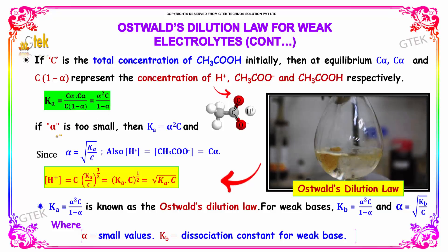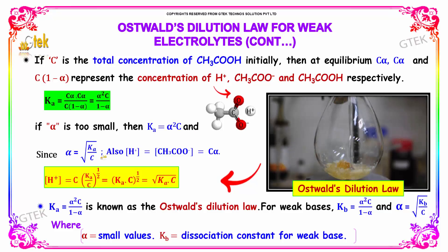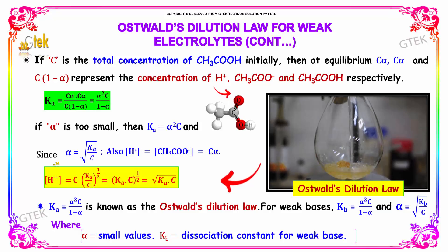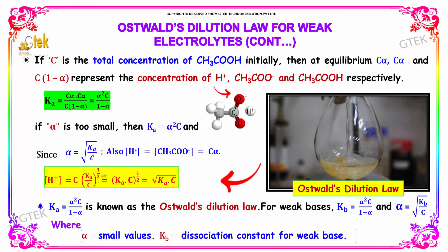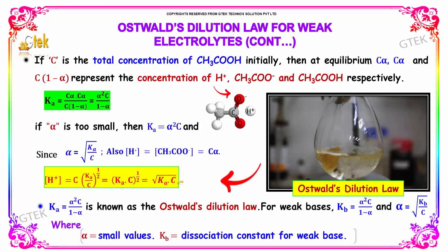If alpha is very small, then Ka is approximately equal to alpha² × C, and therefore alpha equals the square root of Ka divided by C. Since [H⁺] equals C·alpha, substituting gives [H⁺] equal to (Ka × C)^(1/2), which is the square root of Ka times C.